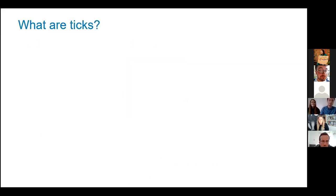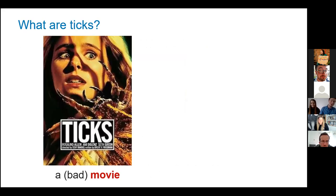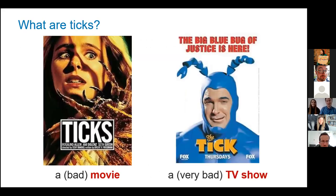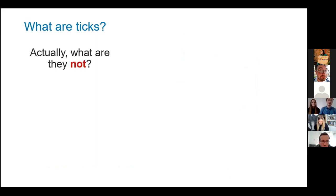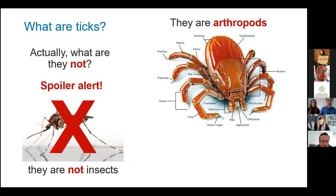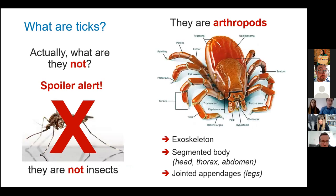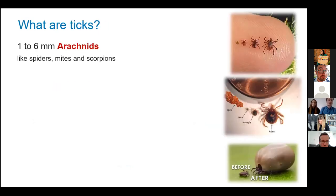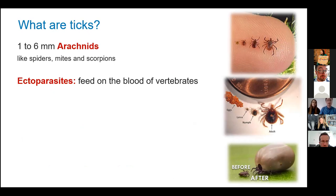So what really are ticks? They are not insects — spoiler alert. Ticks are arthropods, not insects, but share common characteristics with insects such as an exoskeleton, a segmented body, and jointed appendages. Like spiders, mites, and scorpions, ticks are arachnids. Ticks feed on the blood of vertebrates externally, hence they are called ectoparasites.